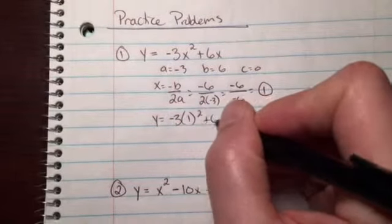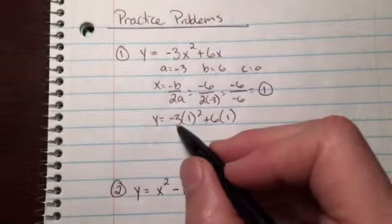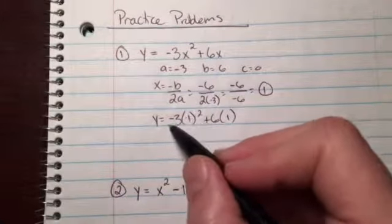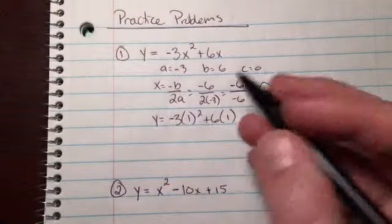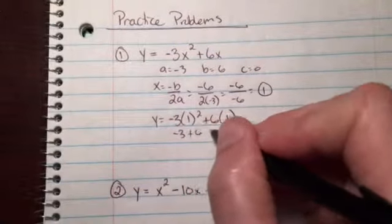Remember PEMDAS - exponents first before you multiply. 1² is 1, then -3 times 1 makes -3, 6 times 1 is 6. So -3 + 6, y equals 3.